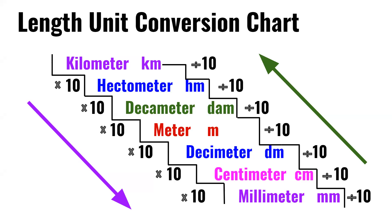Meter times 10 is the decimeter, which is dm. Decimeter times 10 is the centimeter, which is cm. Centimeter times 10 is the millimeter, which is mm.